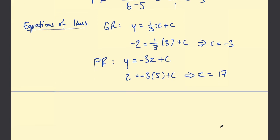And now we have all of the ingredients. We can say for QR the equation of the line is y = (1/3)x - 3. And for PR it's y = -3x + 17. Now the final answers for part B.